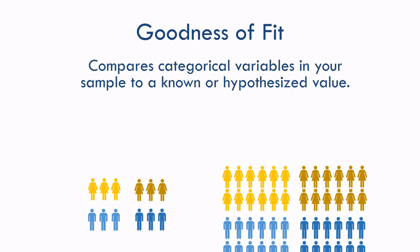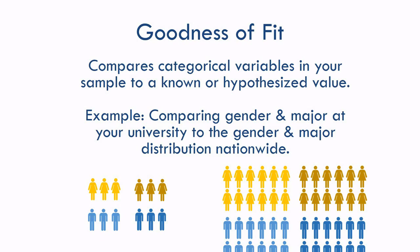The other kind of test isn't quite as common, but you'll probably encounter it at some point. This is the goodness of fit test. The goodness of fit test compares how well categorical variables in your sample match the distribution of a hypothetical value or a known population value. An example would be comparing gender and major at your university to the distribution at the national level — not to find if gender and major influence each other, but to see if your university differs from the national level. The big difference here is our expected values: they don't come from assuming an even spread like in a test of independence, but directly from the hypothesized or known population value. Because this test is less common, people usually use its full name when referring to it.